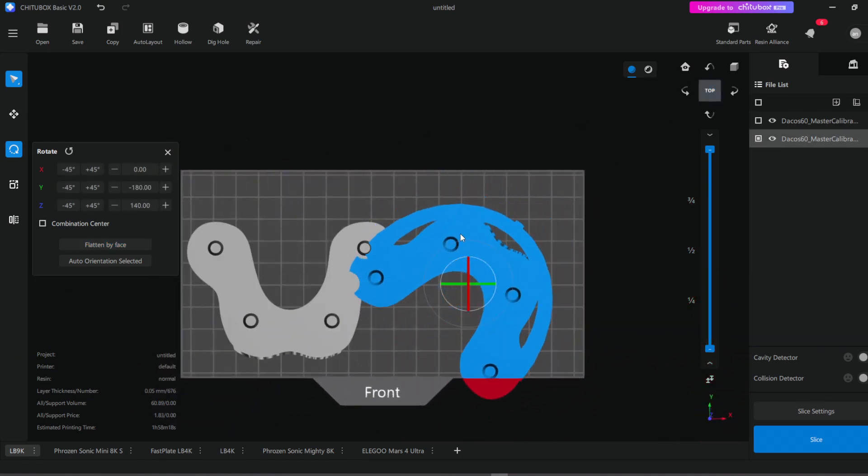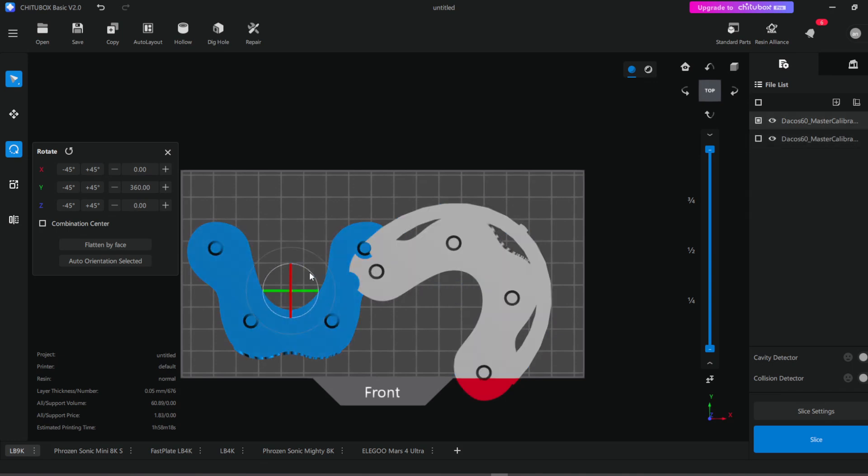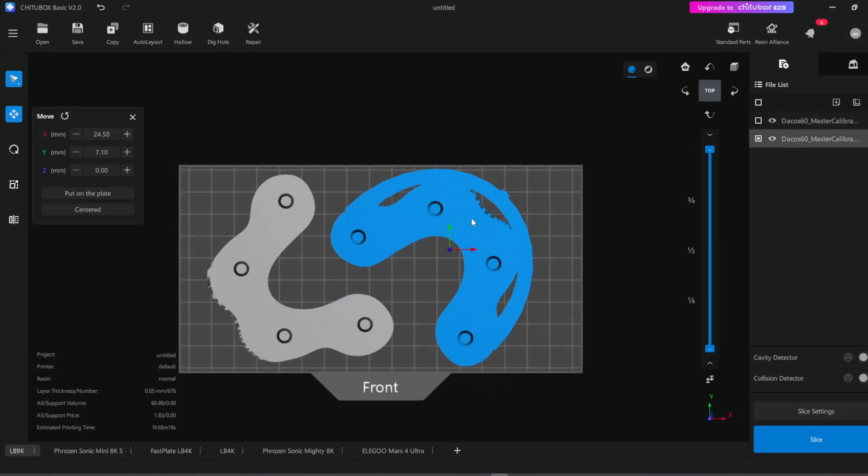Make sure to rotate the models so that the caps face the build plate, as shown here. This orientation will match how you'll print your dental models.